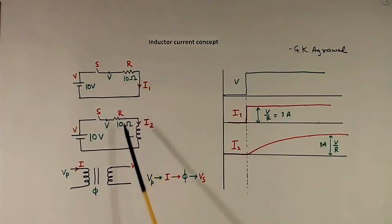I have shown two circuits. In this circuit, there is only one resistor. In the other circuit, a resistor and inductor both are there.